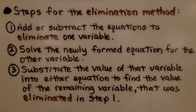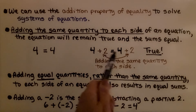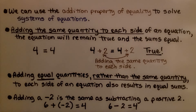If this sounded confusing, stick with me — I'm going to walk through it. We can use the addition property of equality to solve systems of equations. Adding the same quantity to each side of an equation, the equation will remain true and the sums equal.